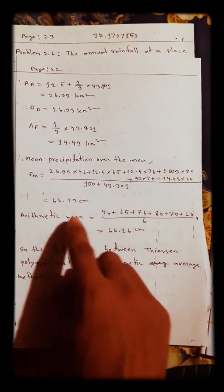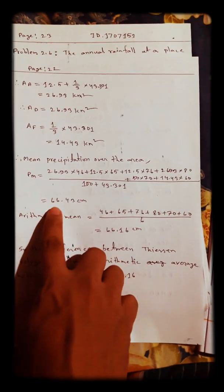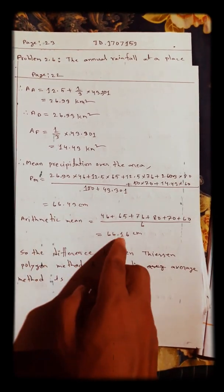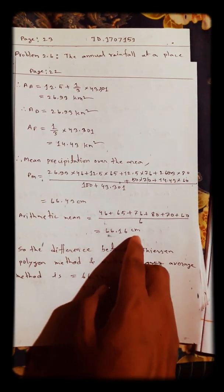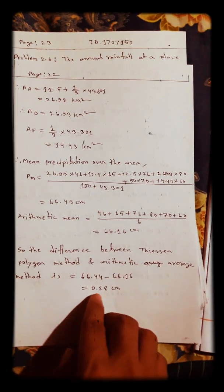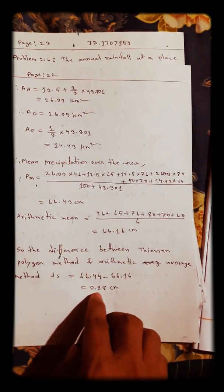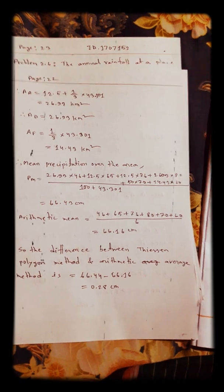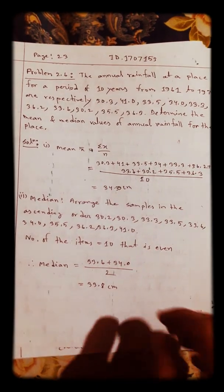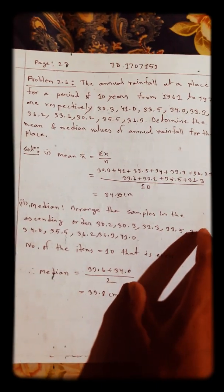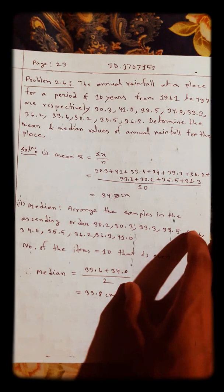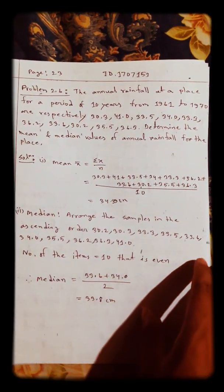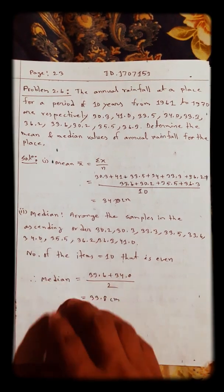Comparing the two methods: the Thiessen polygon method gives 66.43 centimeters and the arithmetic mean gives 66.16 centimeters, so the difference is 0.28 centimeters. In the next video, we will discuss another math problem — mean and median.